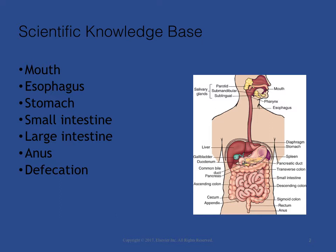The rectum contains vertical and transverse folds of tissue that help control expulsion of fecal contents during defecation. Each fold contains veins that can become distended from pressure during straining, resulting in hemorrhoid formation. The body expels feces and flatus from the rectum through the anus. Normal defecation begins with movement in the left colon, moving stool toward the anus. When stool reaches the rectum, distension causes relaxation of the internal sphincter and an awareness of the need to defecate. At the time of defecation, the external sphincter relaxes and abdominal muscles contract, increasing intrarectal pressure and forcing the stool out.